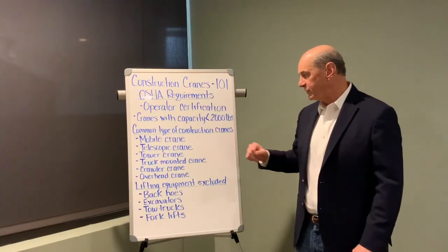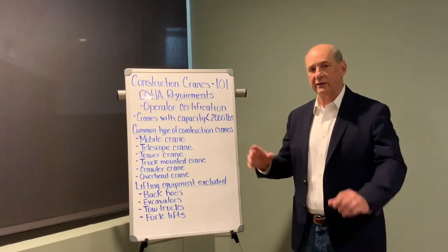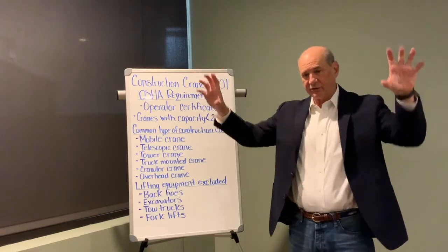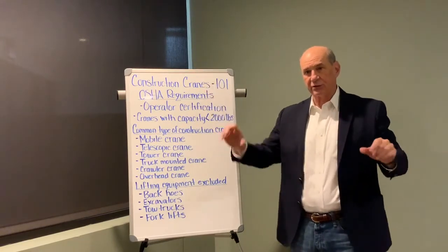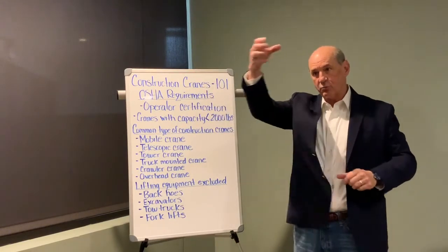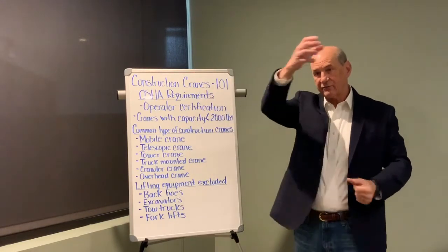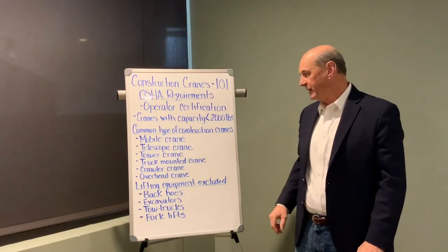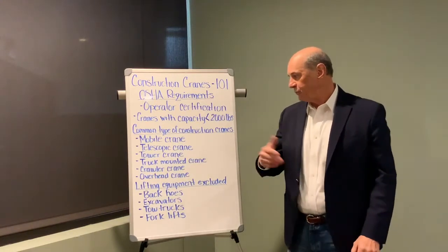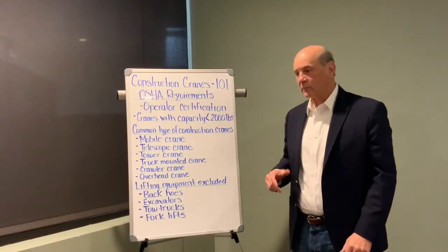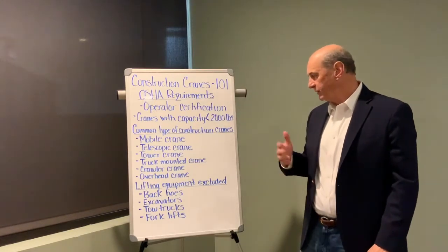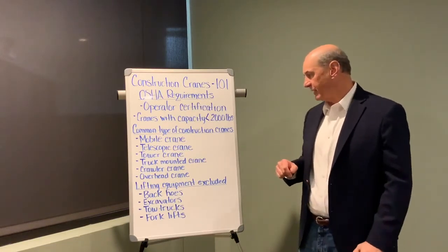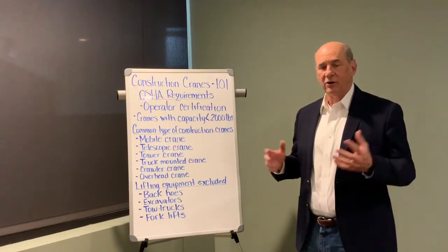Another type of crane is an overhead crane. That's something where you see a steel structure and the crane moves back and forth on the header of that structure to deliver equipment and move equipment or materials around the job site. It is also very commonly used in industrial settings.